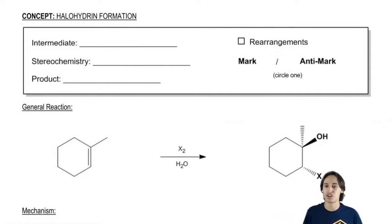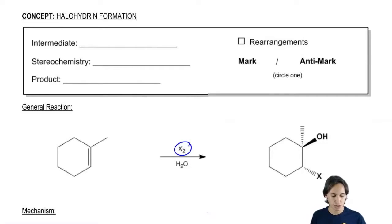Let's go ahead and get started. The general reaction is that I still have my double bond, I still have my diatomic halogen. The only difference is that I'm running this reaction in the presence of water instead of an inert solvent.